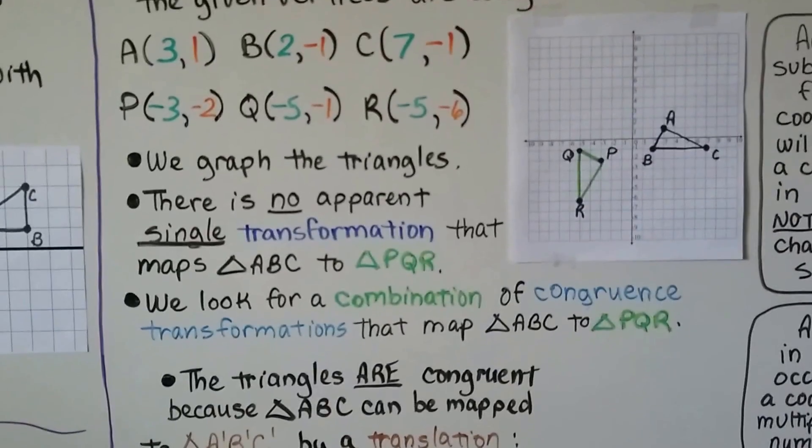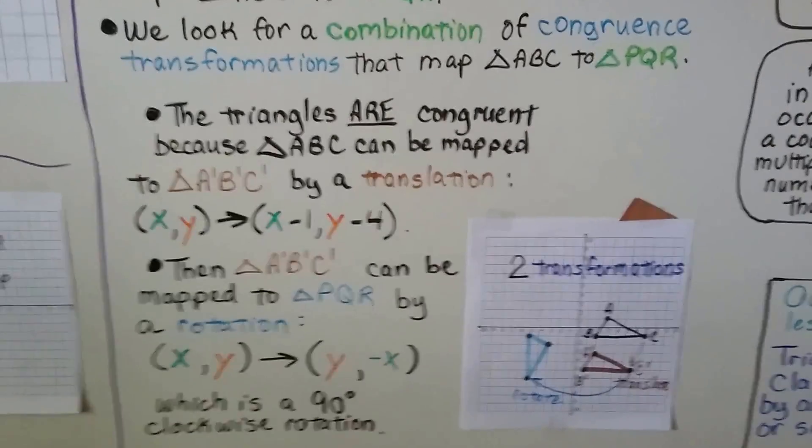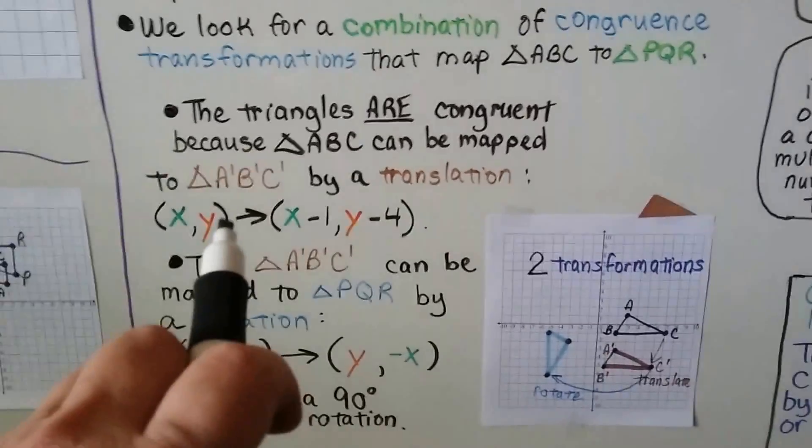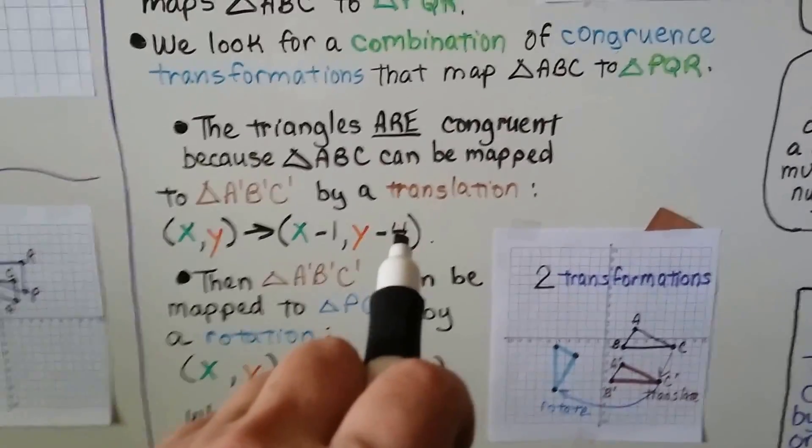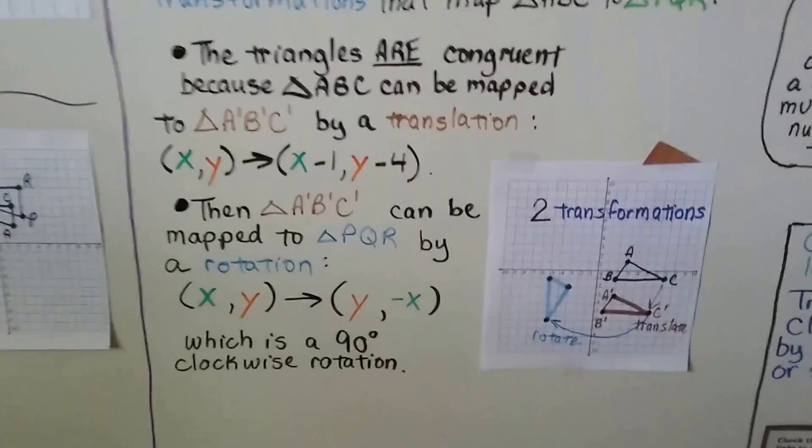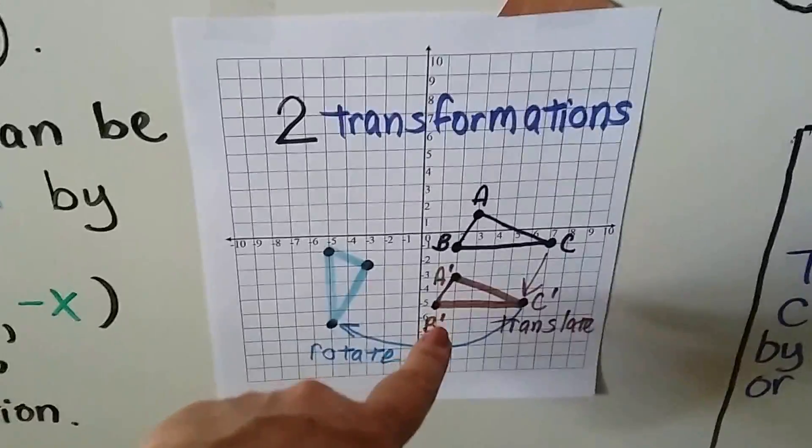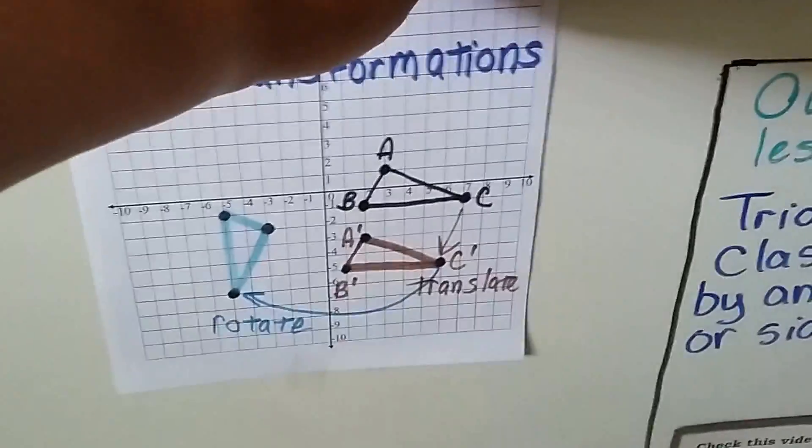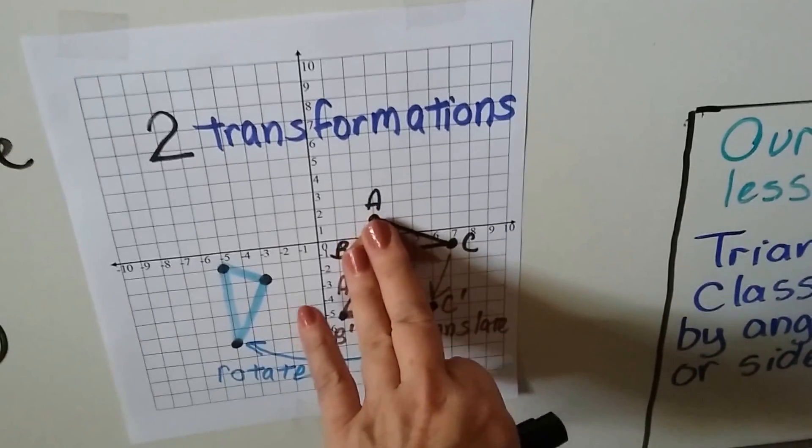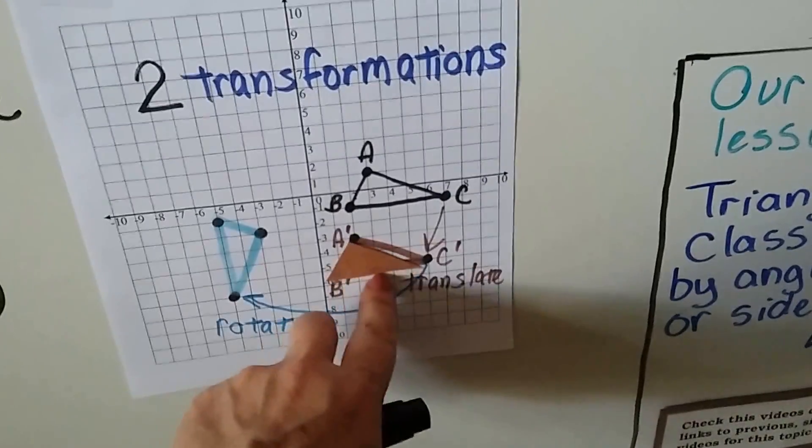So there's more than one transformation. The triangles are congruent because triangle ABC can be mapped to A'B'C' by a translation. We would do x minus 1, y minus 4 to these ordered pairs. So we've got ABC translates to A'B'C', so this little triangle would just translate and slide down just like that. See? It's not going perfect.